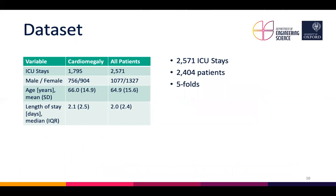After applying the pre-processing steps outlined earlier, we're left with 2,571 ICU stays from 2,404 patients in our dataset. The table on the left gives an overview of patient characteristics comparing patients with cardiomegaly to the rest of the dataset. The dataset was split into five folds for cross-validation, and each model was trained on the same five folds but only made use of the relevant modalities.